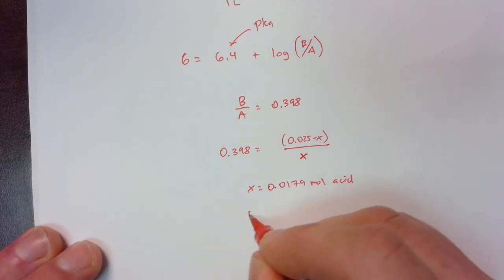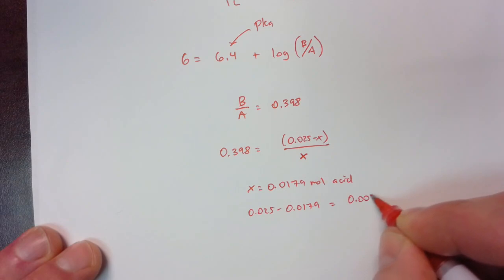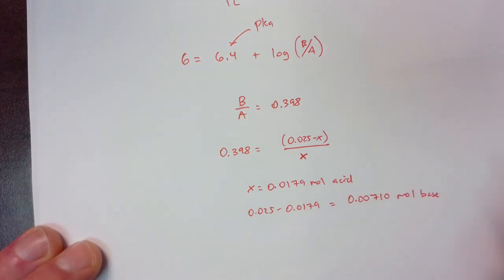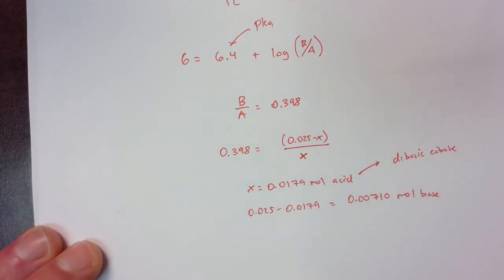So we do solve for x and we get 0.0179 moles of acid. And then 0.025 minus that number, and it will be less than that at 0.00710 moles of base. So the acid is going to be the dibasic citrate. And the base is going to be the tribasic citrate.